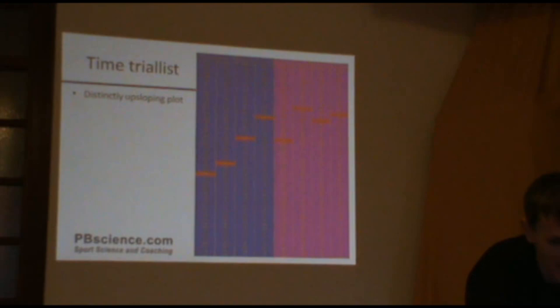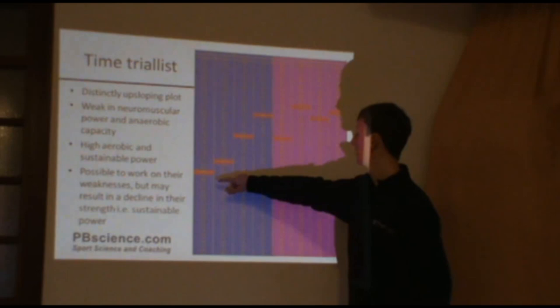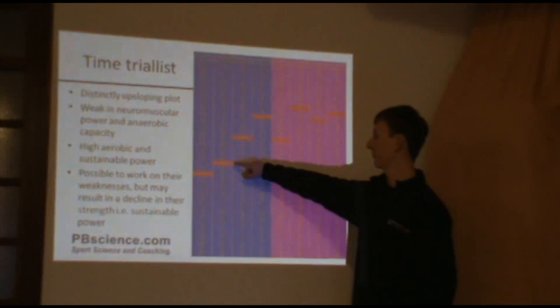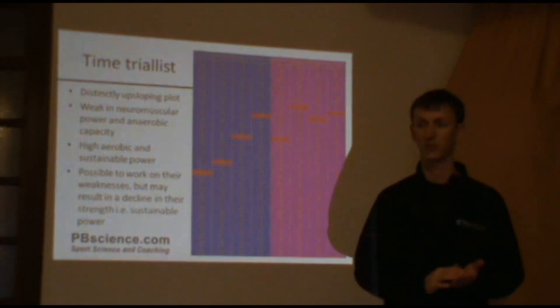Time trialists, I'm sure there's plenty in this room who've got a similar plot to this. It's up-sloping. So their strength is their sustainable power, their functional threshold, their 20-minute, 60-minute powers. Whereas their neuromuscular power, their anaerobic capacity, they're perhaps not so well-developed, and not so much of a strength.